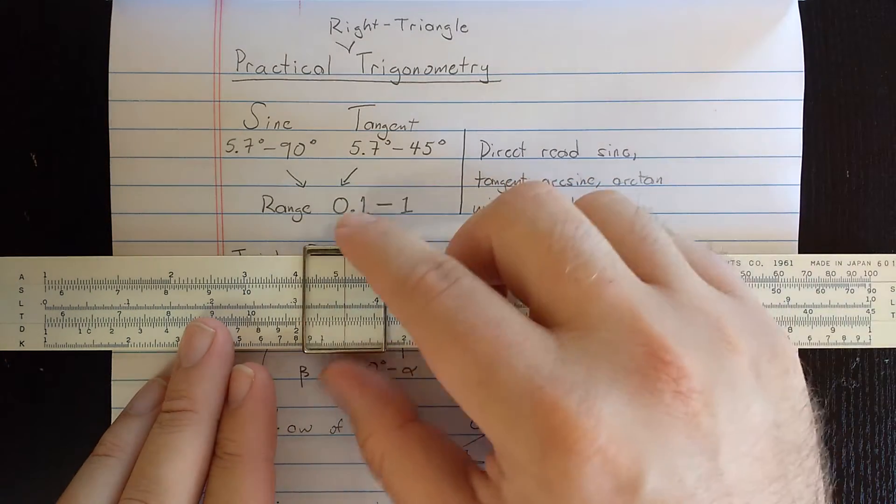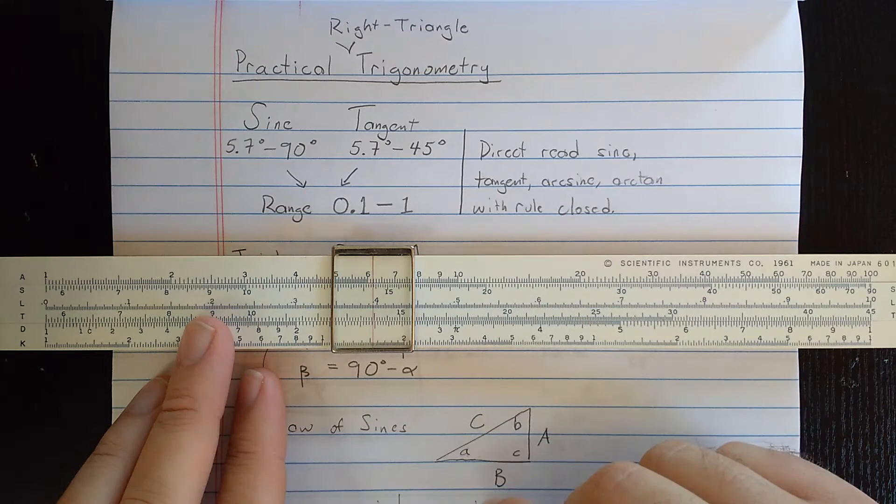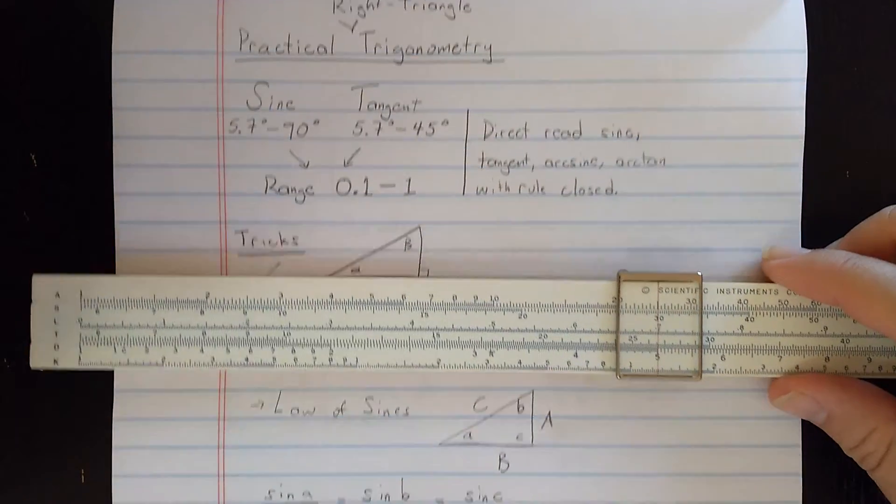Using the S and T scale against the D scale, you can directly read sines and tangents or arcsine or arctangent reading backwards. For example, just to compute a sine, if I set 30 degrees on the S scale here, then I read 0.5, which is the sine of 30 degrees on the D scale.